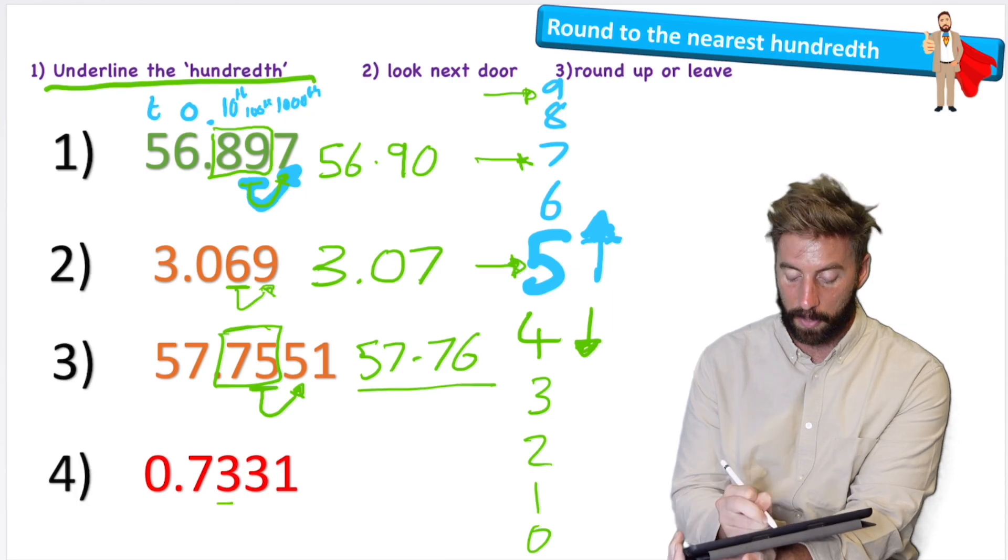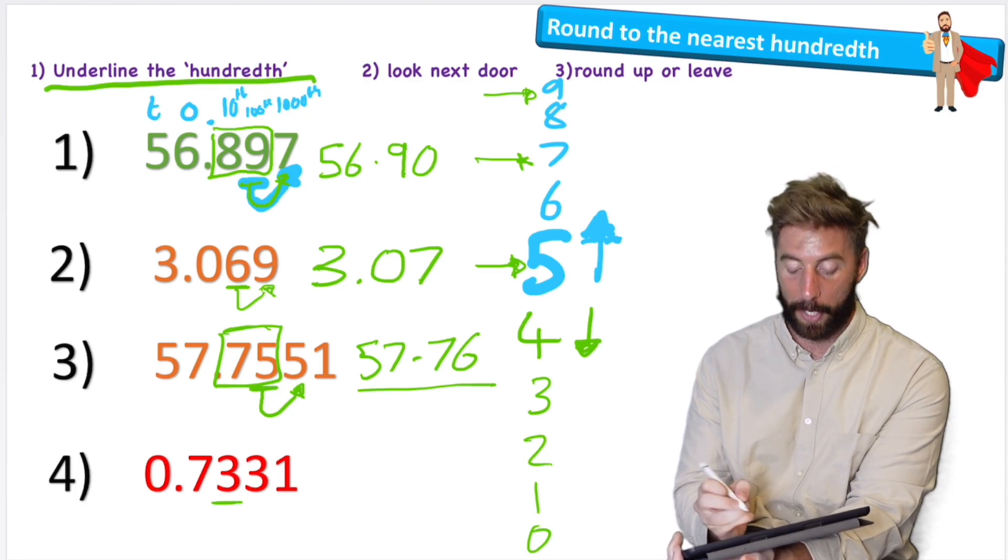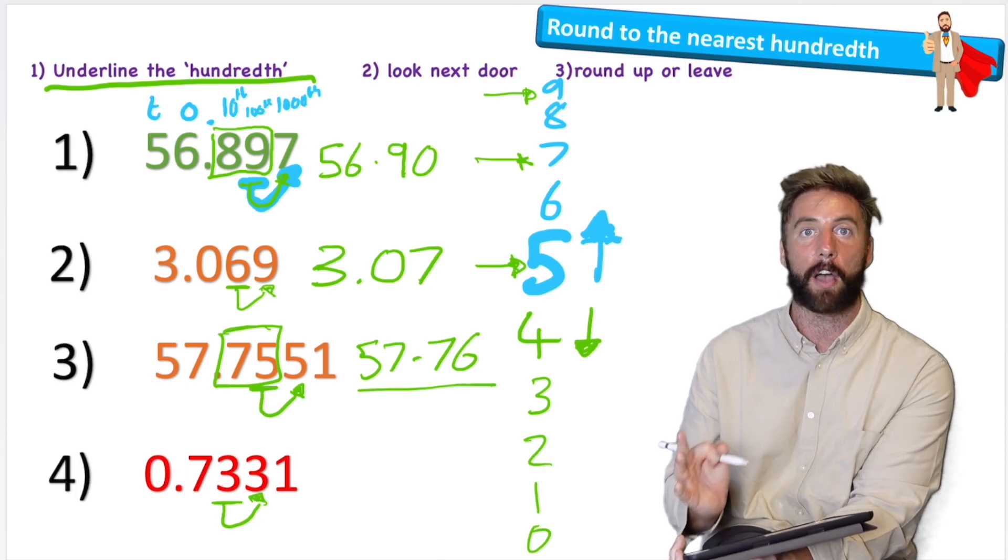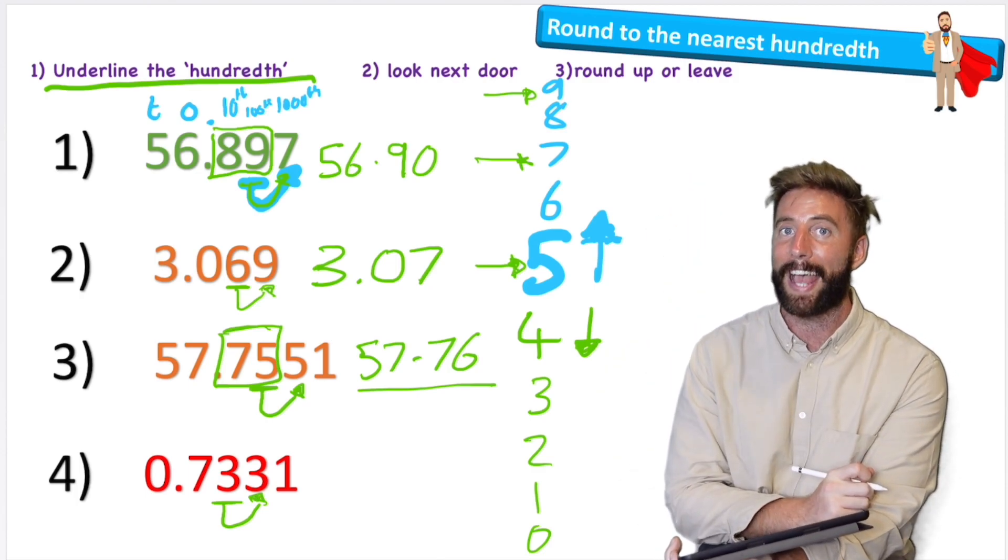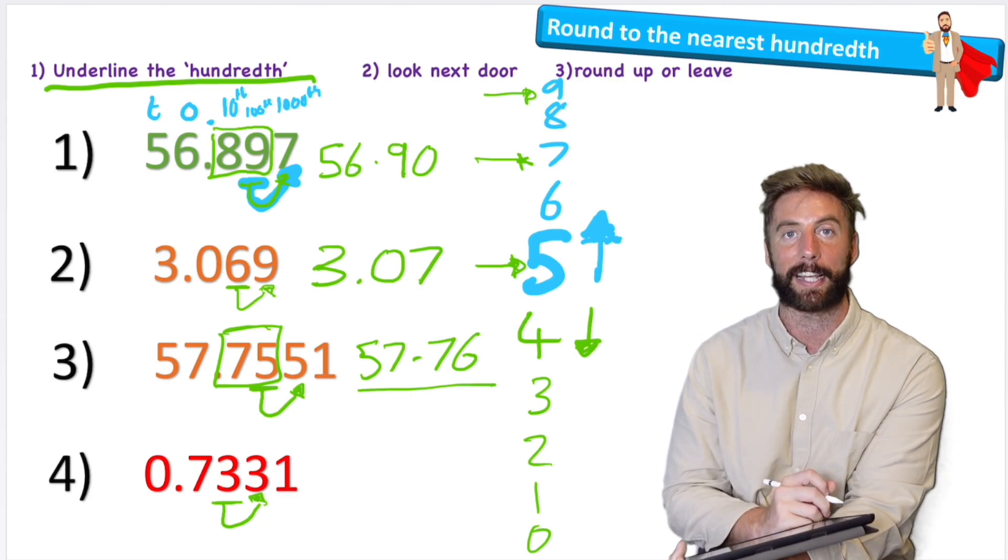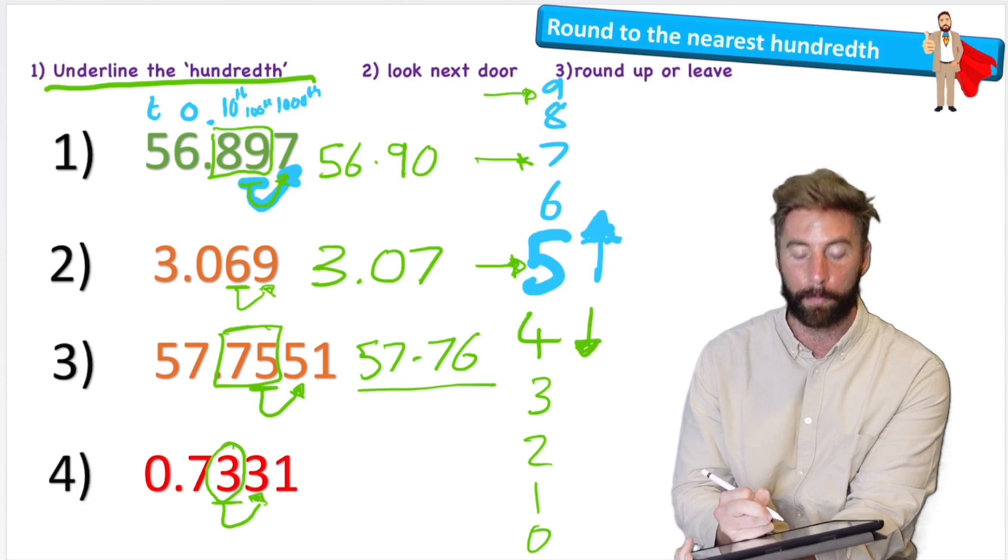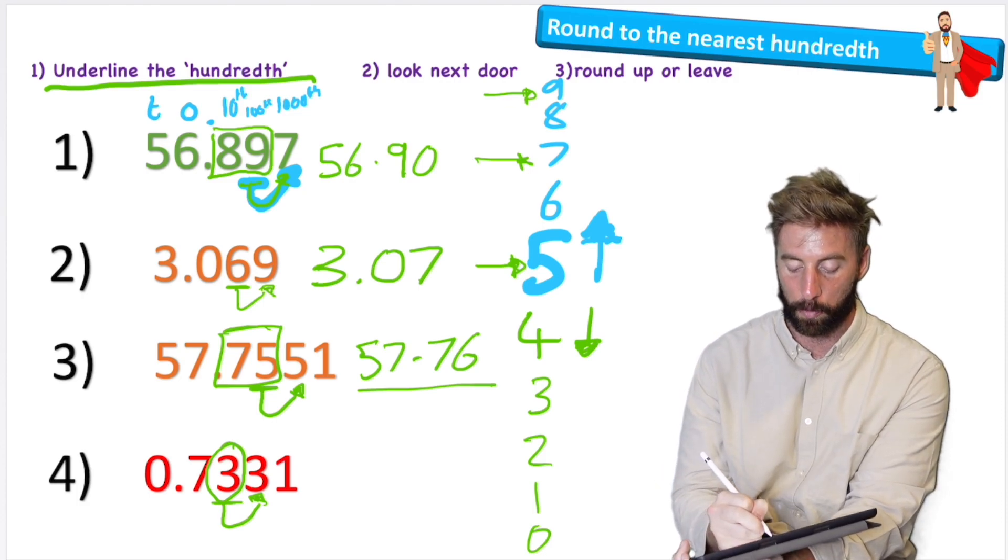So following the steps as normal, underline the hundredths, three this time. And now I can look next door. And uh oh, I have a three. So let's remember our rhyme: five or more let it soar, four or less let it rest. Three is less than four, so we would let my other three, the one in the hundredths column, rest. So my answer would become 0.73.